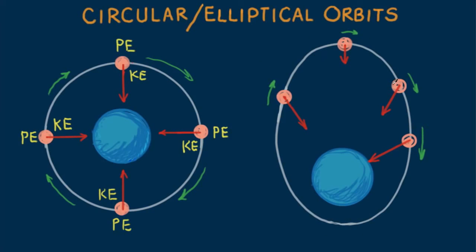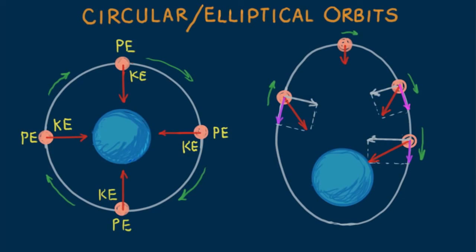We can look at changes in speed by considering the components of gravitational force along the satellite path. The component perpendicular to the satellite path doesn't affect speed but changes the direction of motion, curving it away from a straight-line path. The component along the path changes speed: when in the same direction of motion, speed increases; on the other side, the component slows the satellite because it's going against gravity. So the satellite has least speed farthest from Earth and greatest speed when closest. I want to leave you with a question: what becomes of the force component along the satellite's path when the satellite is closest to and farthest from Earth, and why?